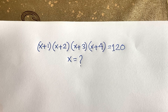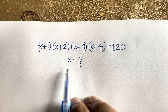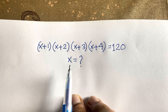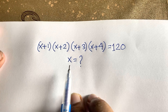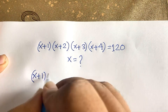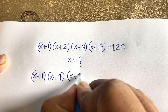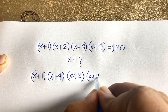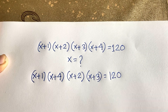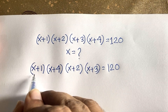Hello everyone. In this video we solve this Chinese Math Olympiad question. It is an interesting math problem: (x+1)(x+2)(x+3)(x+4) = 120. How do we solve this? First, I can rearrange the terms as (x+1)(x+4) times (x+2)(x+3) = 120.